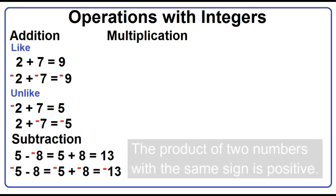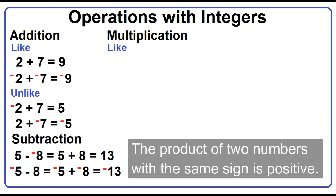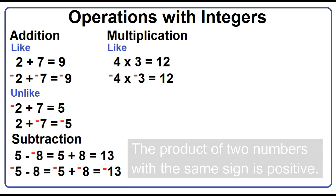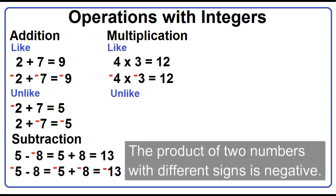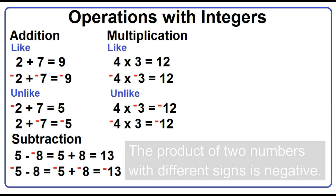Multiplication: the product of two numbers with the same sign is positive. Example: 4 times 3 is equal to 12. Negative 4 times negative 3 is equal to 12. The product of two numbers with different signs is negative. Example: 4 times negative 3 is equal to negative 12. Negative 4 times 3 is equal to negative 12.